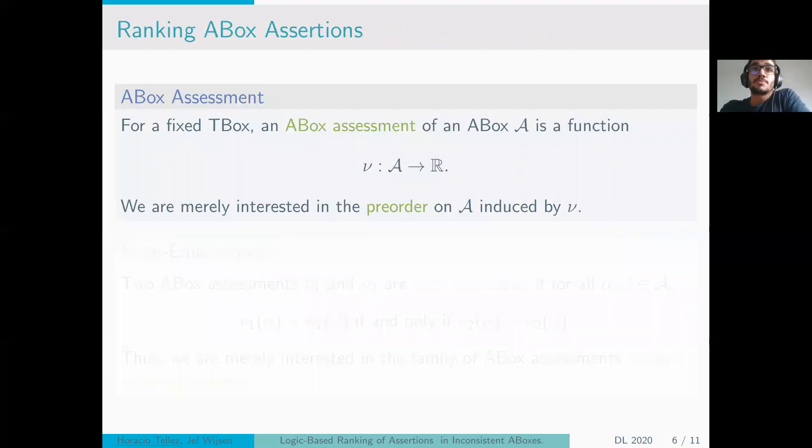In a more formal way, A-box assessment is a function ν that goes from the A-box to the real numbers. This function will induce a pre-order on the A-box, and we will use this order to pick, to choose between assertions when they are conflicting, and we will pick the one with the higher ν value.